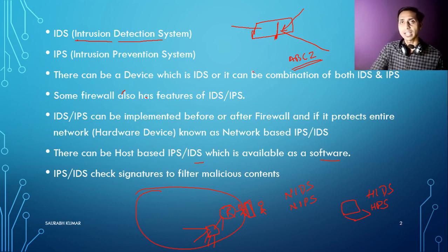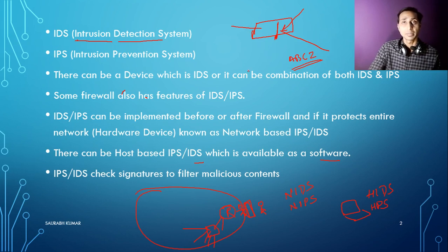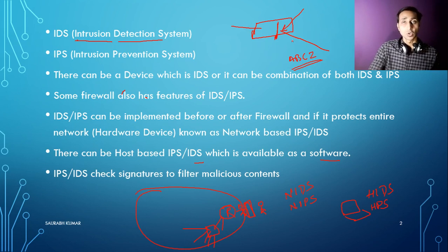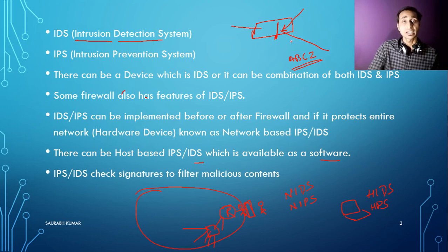However, there can be a loophole. For example, if there is a new malicious content available over the internet that is not yet known or recognized by the vendor of your IPS and IDS, it may pass easily because the device does not have any matching signature for that content. That is somehow a loophole, and they are trying to work on it and implement other types of technologies.